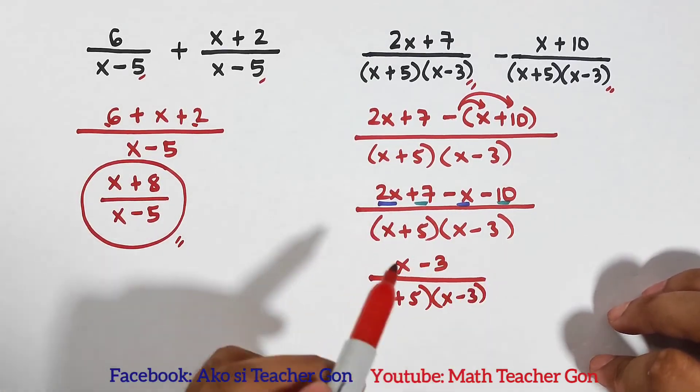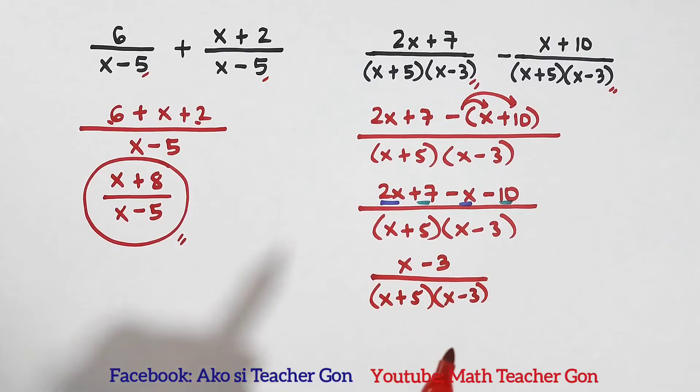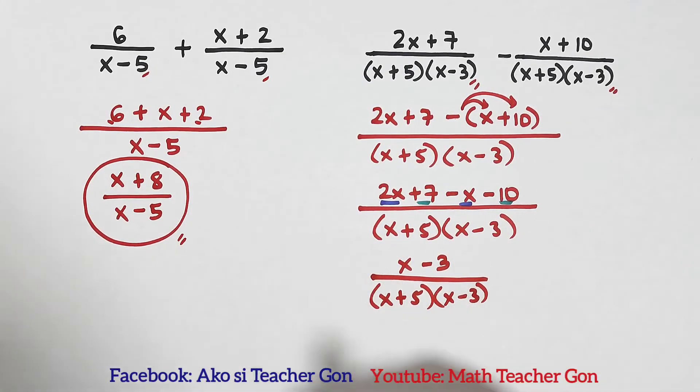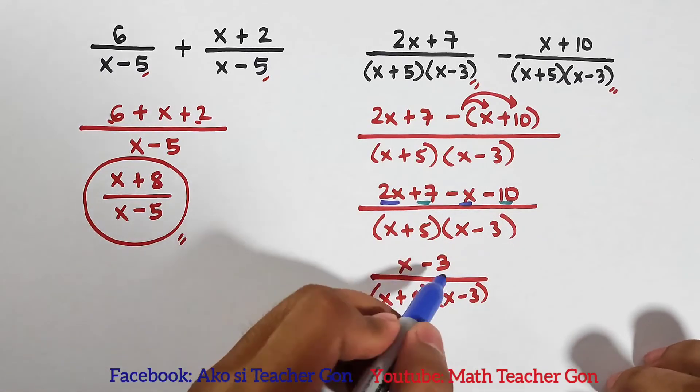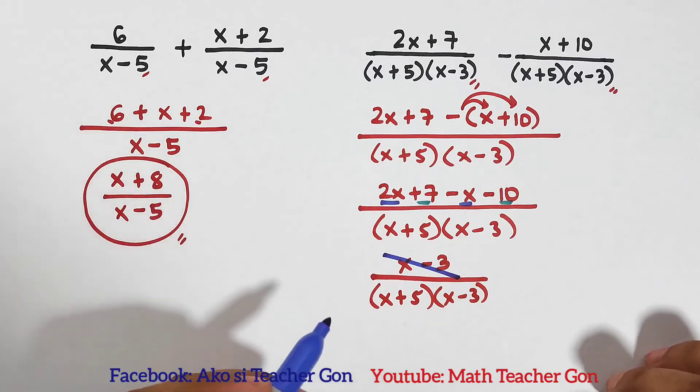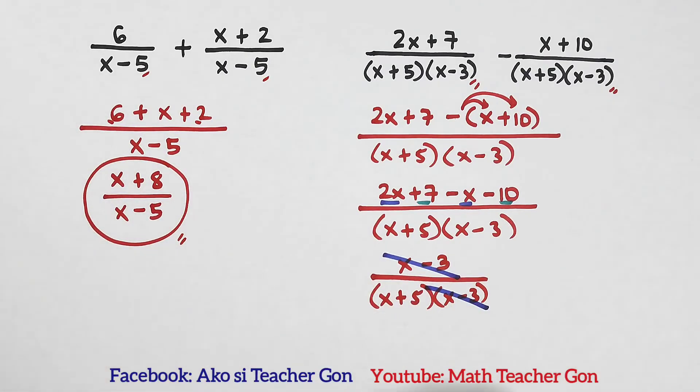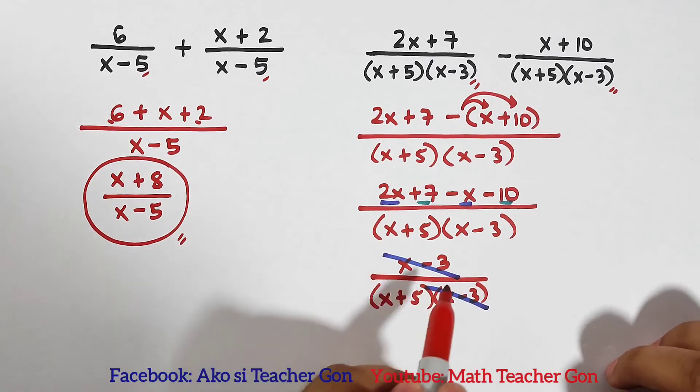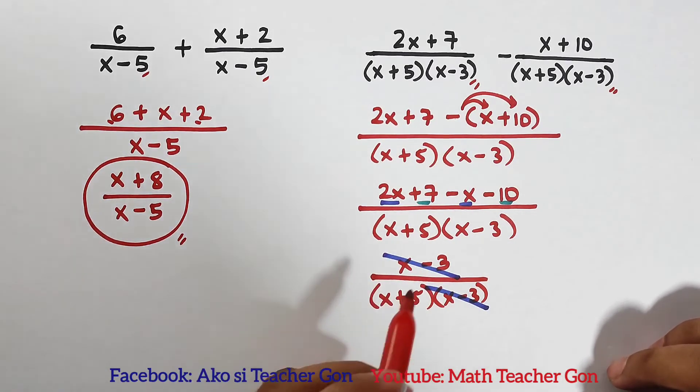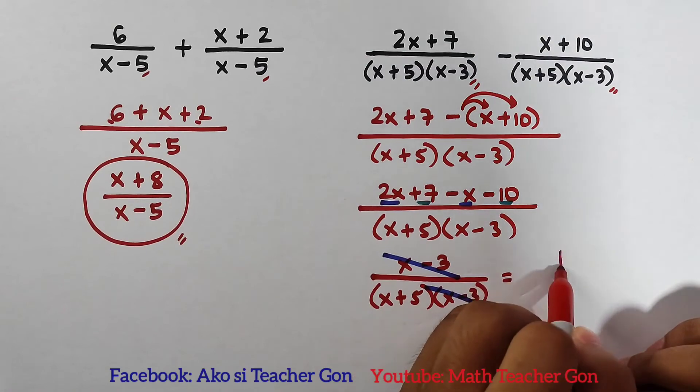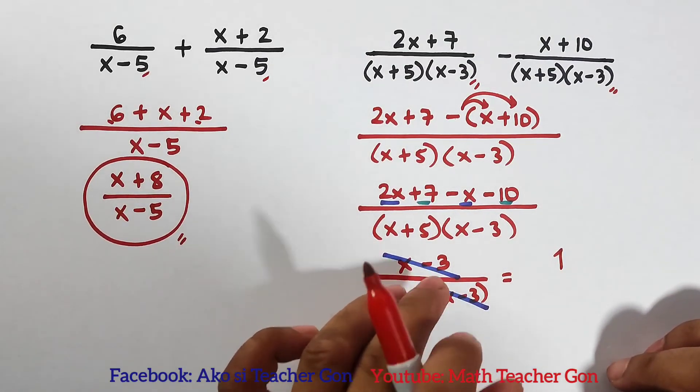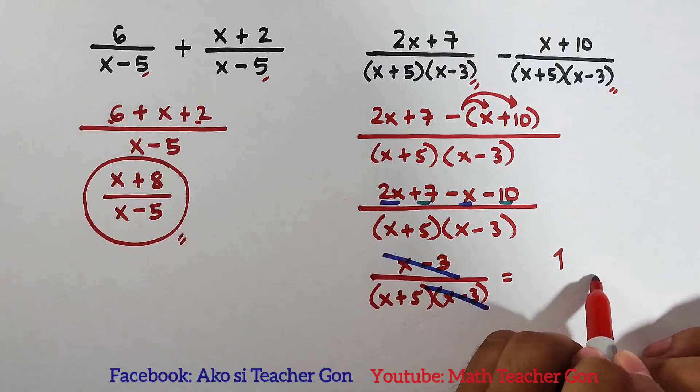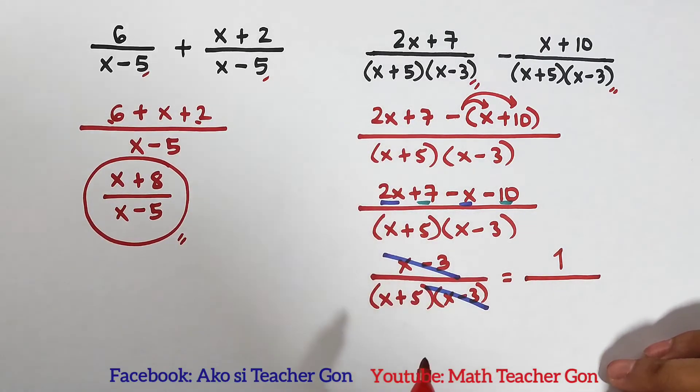Then after combining the like terms, we need to check if we can simplify or we can still simplify the given difference. Here we can eliminate this x minus 3 in the numerator and the x minus 3 in the denominator. So what is the answer now? Since this one is eliminated, we can express our answer as 1 in the numerator, because the numerator is totally eliminated, that is 1 over the remaining denominator, which is x plus 5.